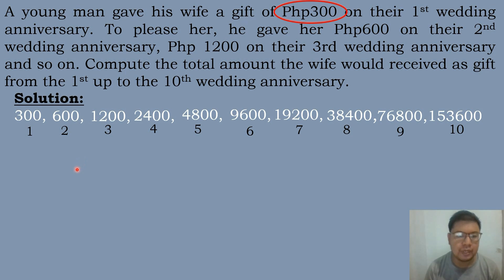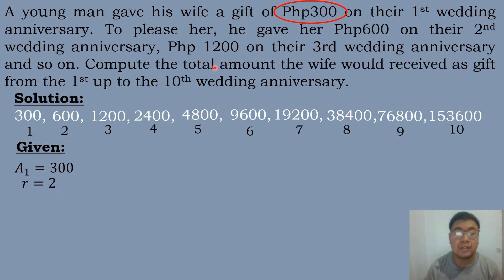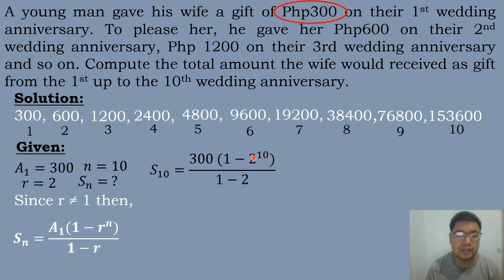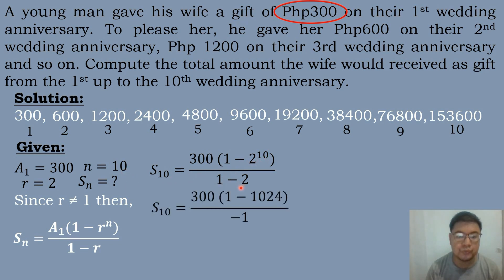We identify the given: a sub 1 equals 300, common ratio r equals 2 (since 600 divided by 300 and 1,200 divided by 600 are both 2), and n equals 10. We find S sub 10. Since r is not equal to 1, we use the formula S sub n equals a sub 1 times the quantity 1 minus r raised to n, all over 1 minus r. Substituting: S sub 10 equals 300 times quantity 1 minus 2 raised to the 10th power, all over 1 minus 2.